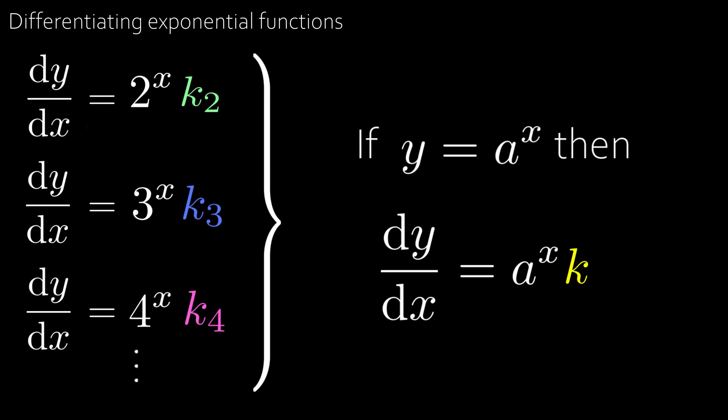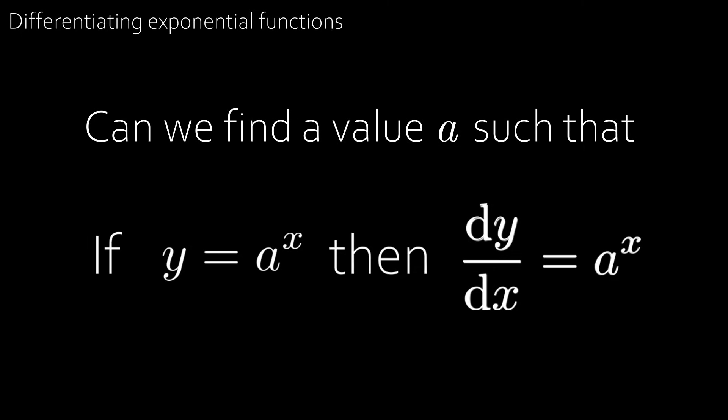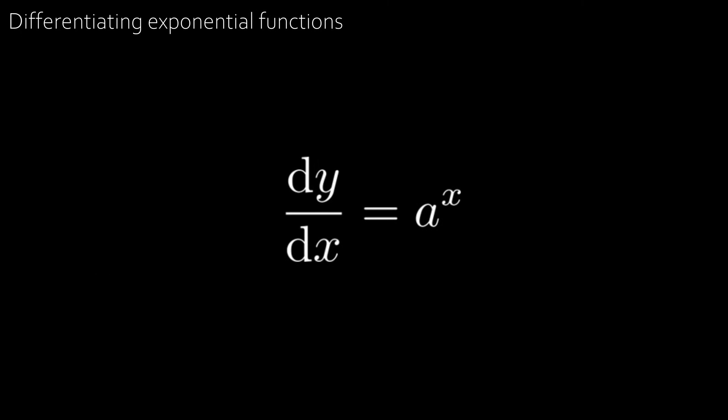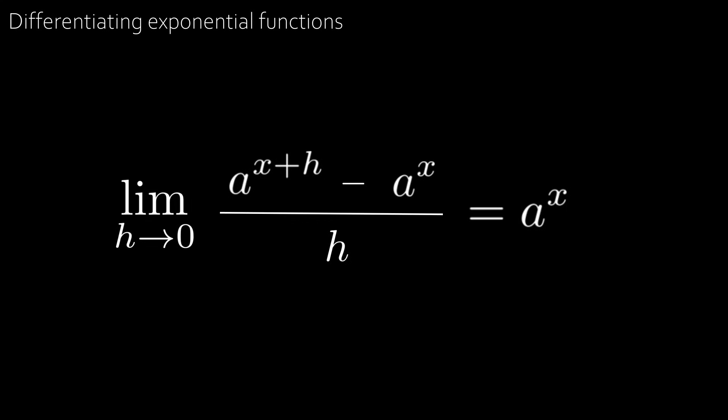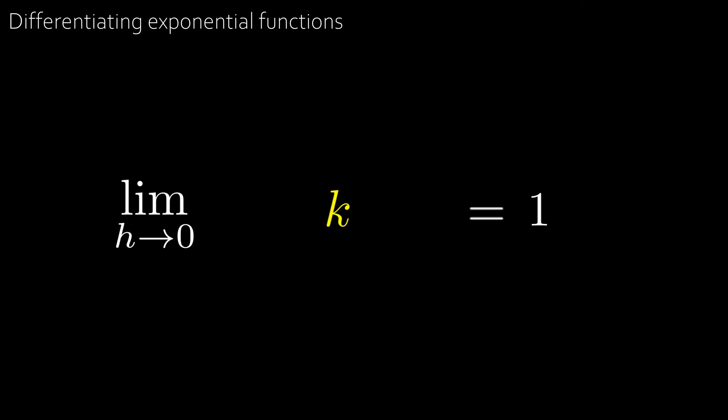We've found dy/dx for exponential functions, but each time we have to calculate the constant k from scratch. So can we make k equal to 1? That is, can we find a value a such that if y = aˣ, then dy/dx is also equal to aˣ? Writing dy/dx as a limit and dividing both sides by aˣ, we see the left side is exactly our constant k — so we want k = 1.